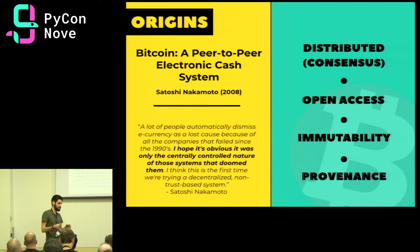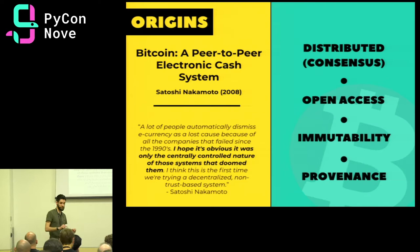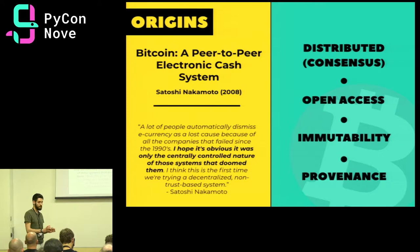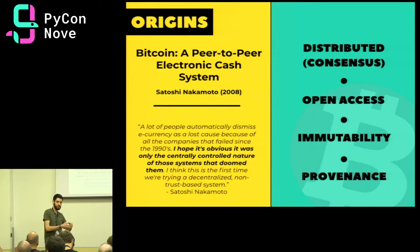The system is also open access, meaning anyone can enter or leave the network at will, at any time, and consensus is still preserved. The blockchain is also immutable: once a record is added, it cannot be deleted or updated — only updated with future transactions. And there is provenance, because an asset can be tracked throughout its entire life, from creation through all updates, since all transactions are always on the blockchain and cannot be deleted.